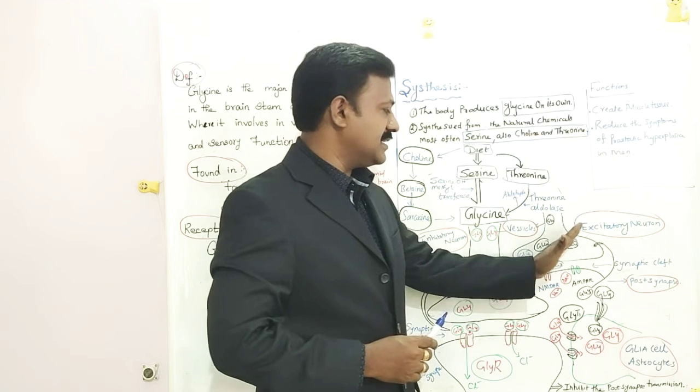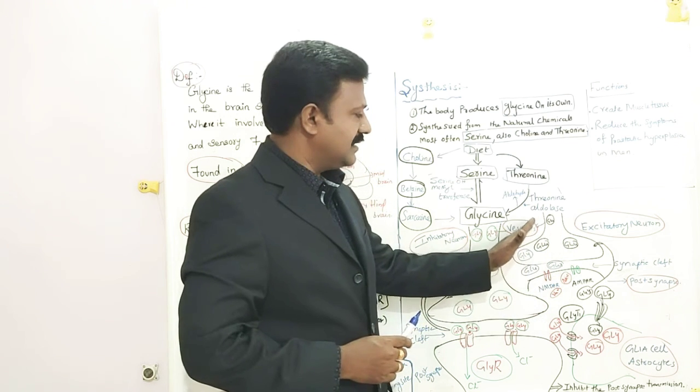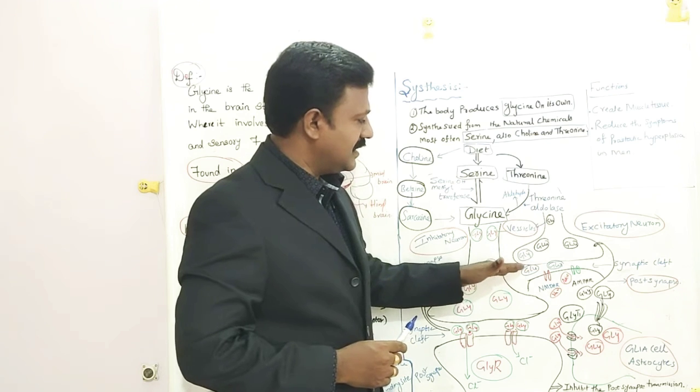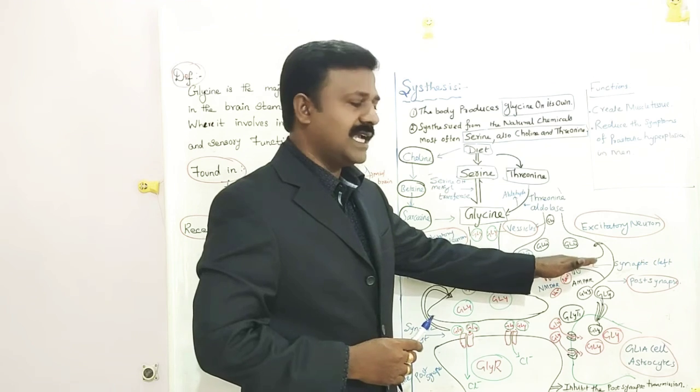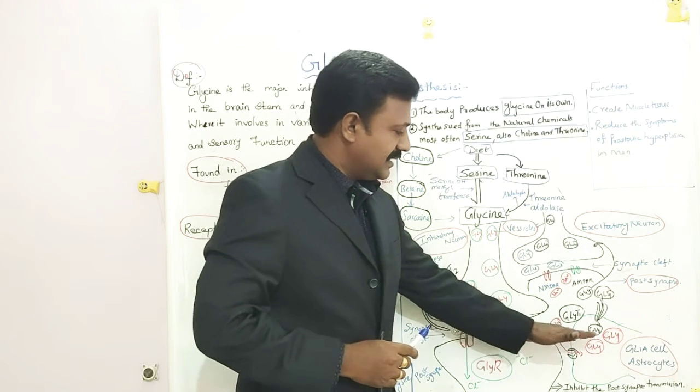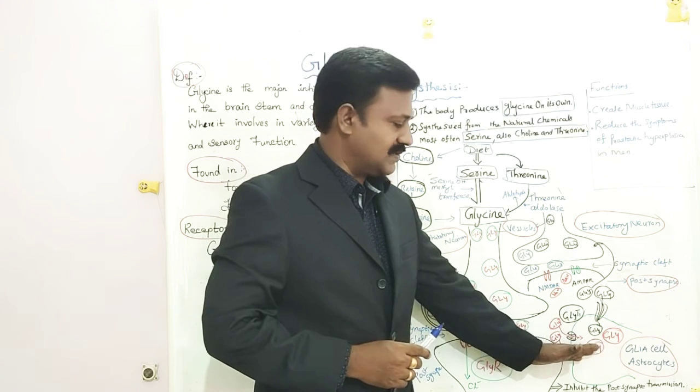In the excitatory neuron, this is the postsynaptic area, this is the presynaptic area. In between, presynapse and postsynapse is called the synaptic cleft. This area is called glial cells or astrocytes.